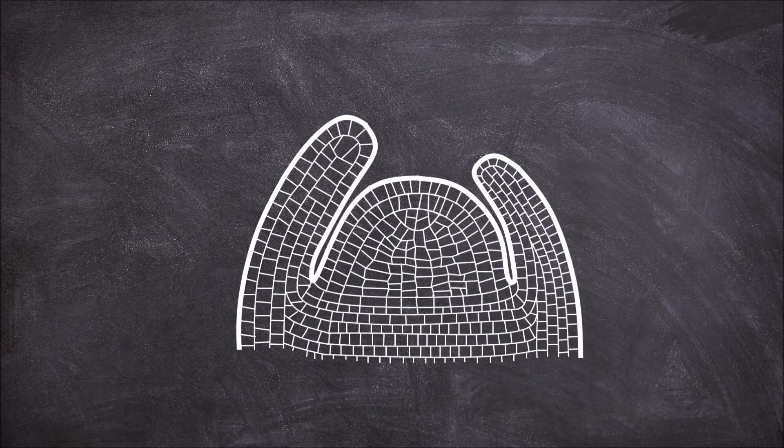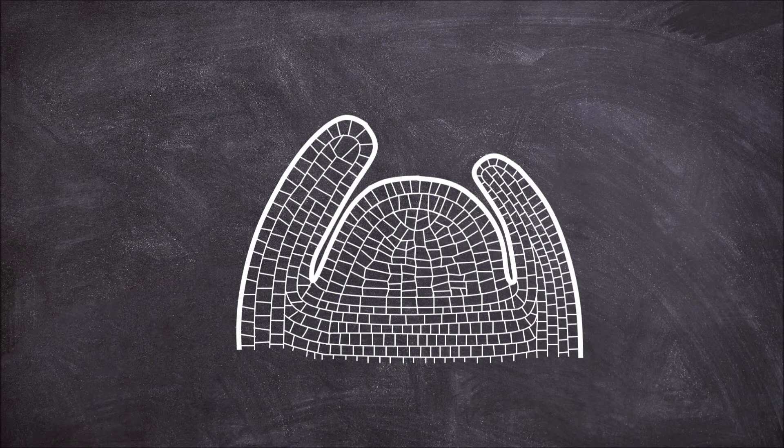If we take a closer look at the shoot apical meristem we will find it consists of layers and zones. The active shoot apical meristem has three zones.